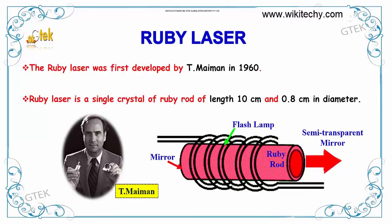Now we will talk about the ruby laser. The ruby laser was first developed by T. Maiman in 1916. A ruby laser is a single crystal of ruby rod of length in centimeter and 0.8 centimeter in diameter.